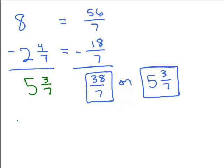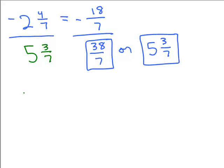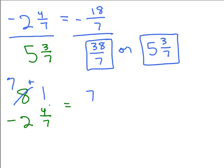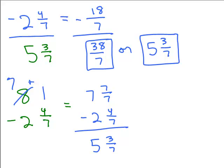The other way is the borrowing technique for 8 minus 2 and 4 sevenths. We borrow from the 8 to get 7 plus 1, and write the 1 as 7 sevenths — the same denominator as below. So we have 7 and 7 sevenths minus 2 and 4 sevenths. Then 7 minus 2 is 5, and 7 sevenths minus 4 sevenths is 3 sevenths — giving 5 and 3 sevenths again.